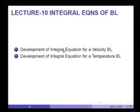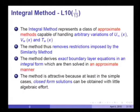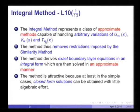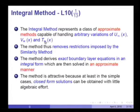The task for this lecture is to derive the integral equations of a boundary layer. We shall begin with the development of the equation for a temperature boundary layer. The integral method represents a class of approximate methods capable of handling arbitrary variations of U infinity, suction or blowing velocity Vw, and wall temperature variation Tw. In contrast, the similarity method permitted only certain types of variations of the free stream velocity, wall velocity, and wall temperature.